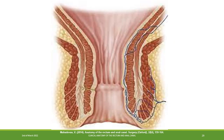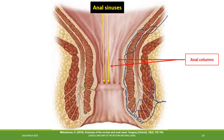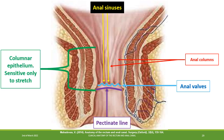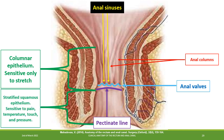The mucous membrane forms a number of vertical folds called the anal columns. The anal sinuses are furrows that separate the anal columns. The columns are joined by the anal valves. The pectinate line separates the anal canal into two halves. The upper half is lined by columnar epithelium and is sensitive only to stretch, while the lower half is lined by stratified squamous epithelium and is sensitive to pain, temperature, touch, and pressure.